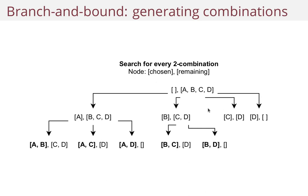And then you continue doing this until you get a chosen list with two elements, and then you're done. So you can work this out by hand — if you have four elements and you want to find every combination of two elements, they are exactly AB, AC, AD, BC, and BD.